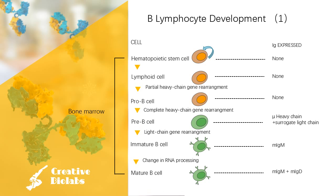Antibody diversity is produced in B lymphocyte development. So before we present gene rearrangement, we should learn about B cell development. B cells develop from hematopoietic stem cells, HSCs, that originate from bone marrow. HSCs first differentiate into multipotent progenitor cells, then common lymphoid progenitor cells. From here, their development into B cells occurs in several stages.